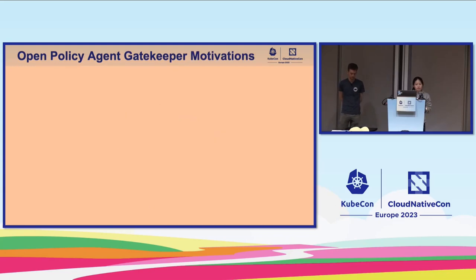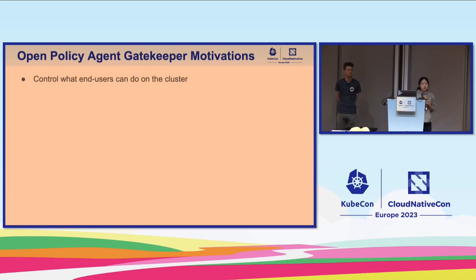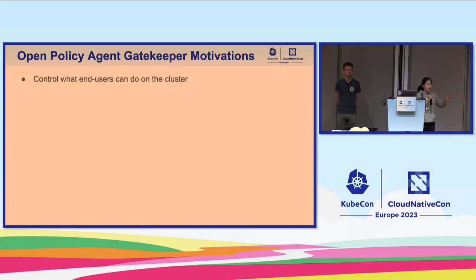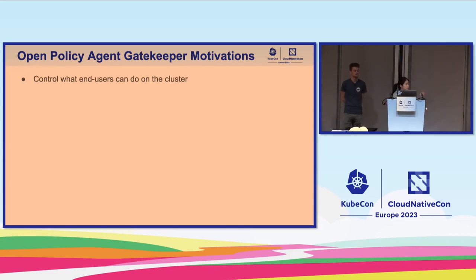Sometimes you might be using OPA Gatekeeper under the hood without even knowing it — Google Anthos actually has Gatekeeper embedded in their policy engine, and Microsoft Azure also has this as part of their Azure Policy feature. For those who have built their own admission webhook, you know how hard that is — any time you make a change you need to recompile and deploy to the cluster. The whole concept behind Gatekeeper is policy as configuration.